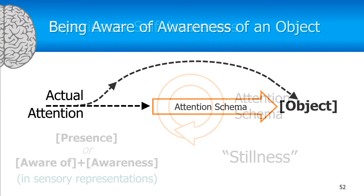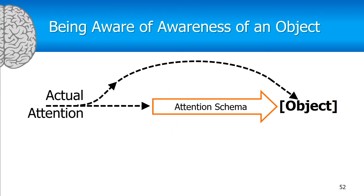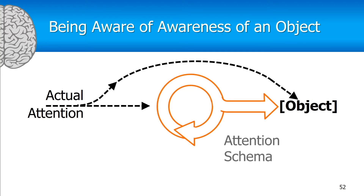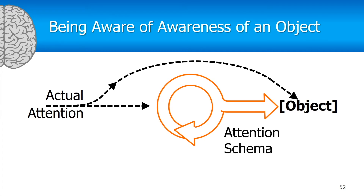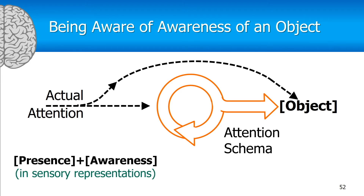Now let's look at being aware of an object and being aware of your awareness of that object. Here, actual attention is directed to an object and to our awareness of that object. This ends up giving you a loop of attention schema with a branch off to the object you're aware of. So the feeling of this would be something like presence-awareness — the awareness of the object you're paying attention to, combined with presence from that loop.